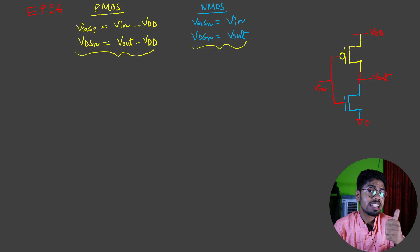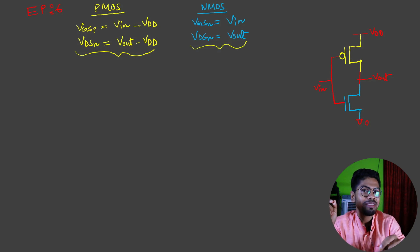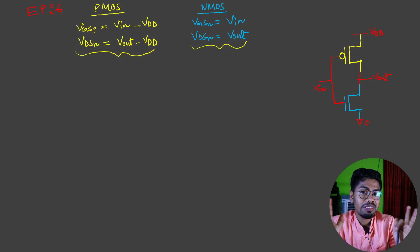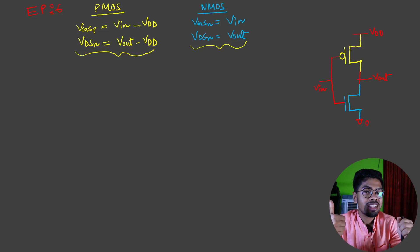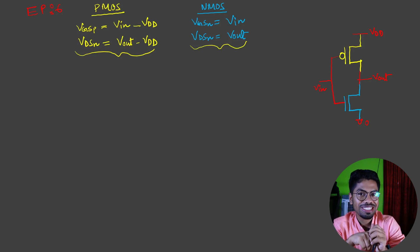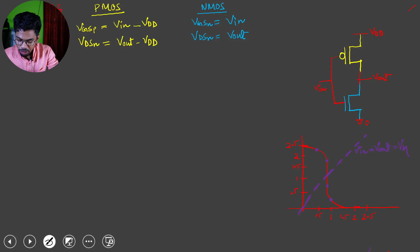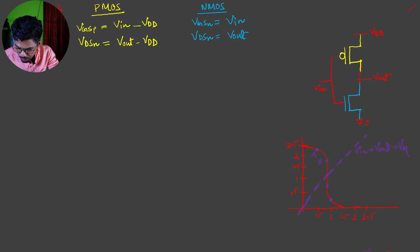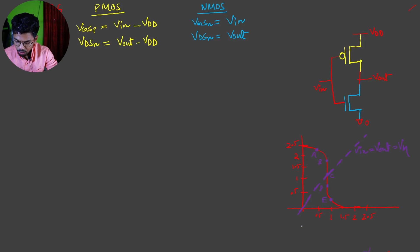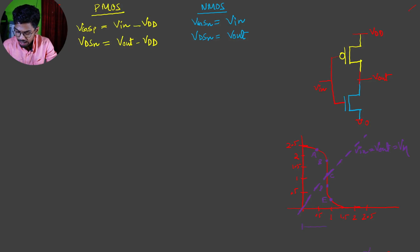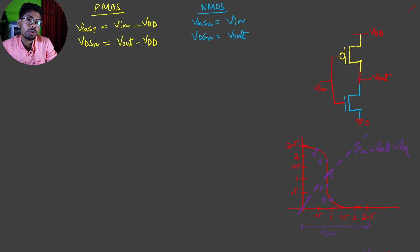Before we start, we need to define a few things which we already covered in our fourth lecture. Now I have the VTC already drawn to save time, and I've marked several points: point A, B, C, D, and E. Our task is to tell the interviewer what is happening with our PMOS and NMOS as we traverse from point A to point E, up to V_in = 2.5V.